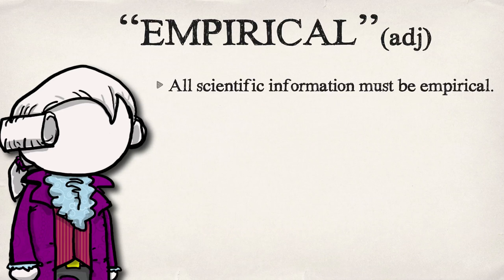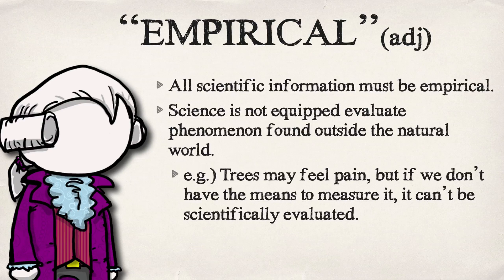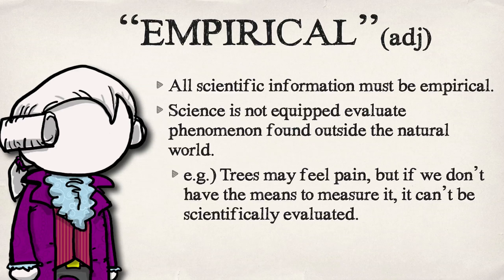Information in science must be empirical — we must be able to measure it in the natural world. Science is not equipped to evaluate phenomena outside the natural world. An example is the idea that maybe trees talk and maybe trees feel pain. This might absolutely be true, but we don't have any way to measure that. It's not part of the natural world in a way that we can measure, so if we can't measure it, we won't know.